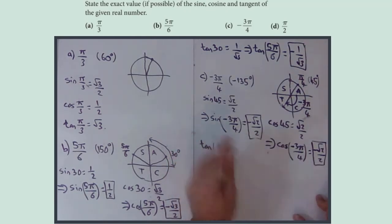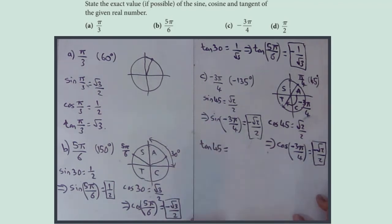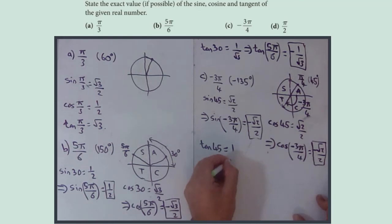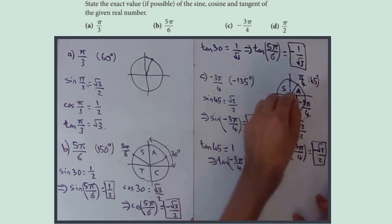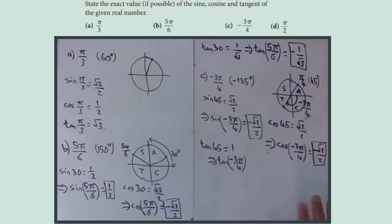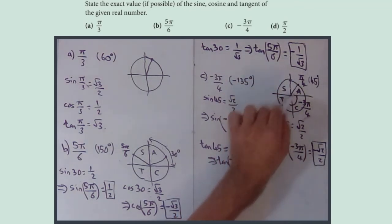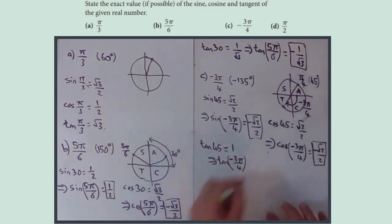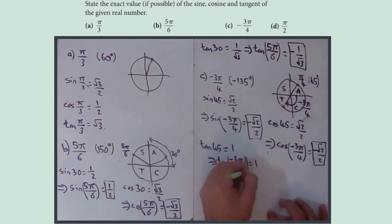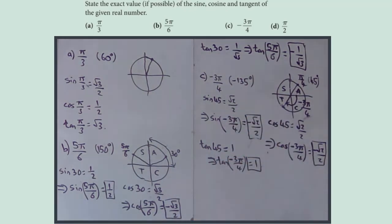Tan(45°) = √2/√2 = 1. Tan is positive in the third quadrant — you can think of it as the gradient of the line, and the line through that angle has positive gradient, just as in the first quadrant. So tan(−3π/4) = 1.